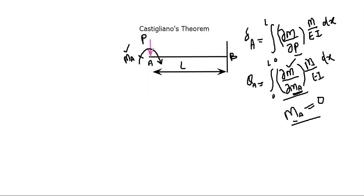So we assume that MA is acting there and modify Castigliano's theorem to make our assumption close to the real system. When we have made this assumption, we calculate the bending moment of the beam using the method of sections.